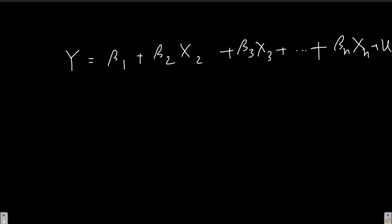I don't have x2, so what I do is substitute this x2 with my proxy. So beta 1 plus beta 2 into lambda plus mu z, and then I have beta 3 x3 and other terms beta n xn, and my u error term.